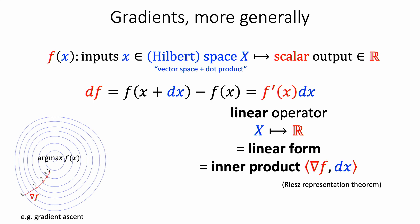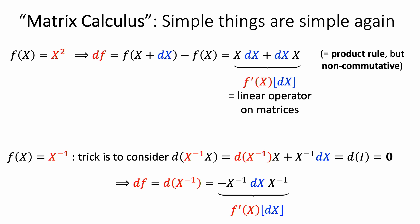You can generalize this to arbitrary Hilbert spaces. If x is an arbitrary vector space with an inner product and f maps it to a scalar, the derivative must be a linear form — something that maps a vector to a number linearly. By the Riesz representation theorem, any linear form with a dot product can be written as a dot product with something, and that something is the gradient. If you have a fancier inner product, the gradient will be defined accordingly, and it will always point uphill in the norm induced by that inner product.